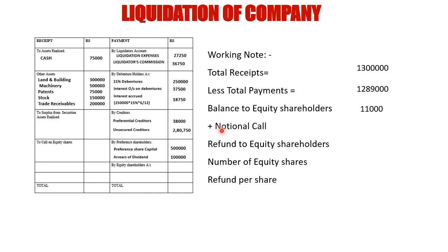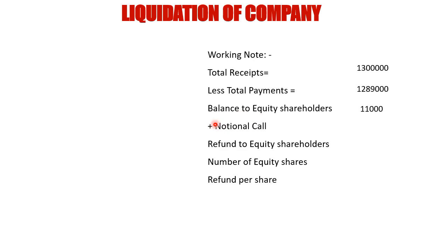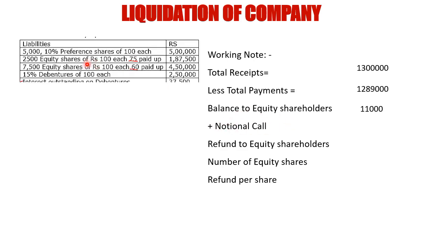Now we add the notional call. For notional call, we revisit the question: 2,500 equity shares at 75 paid up and 7,500 equity shares at 60 paid up. Always select the lowest paid-up value — in this case 60 rupees. We need to make both types equal, so 7,500 shares at 60 need another 15 rupees to match 75. That 15 rupees is the notional call per share. Notional call total = 7,500 × 15 = 1,12,500.